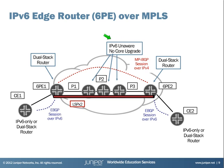In 6PE, the core routers are completely untouched — no hardware, no software upgrade, and no configuration at all. The configuration will be done only on the PE routers where you want to offer IPv6 services, by simply making those PE routers dual-stack routers. Another benefit of 6PE is that it is really easy to configure, as we're going to see later on.